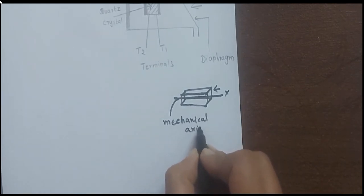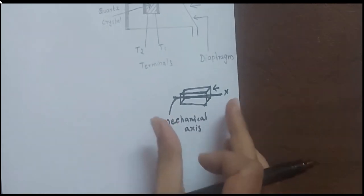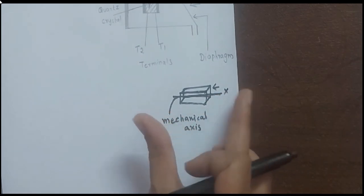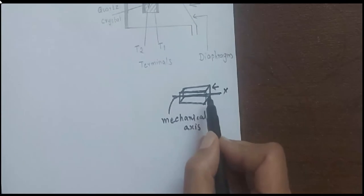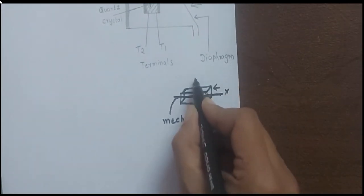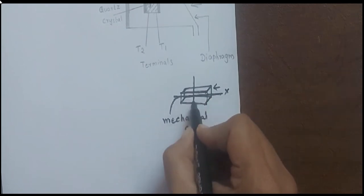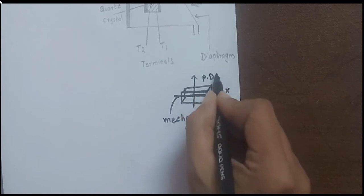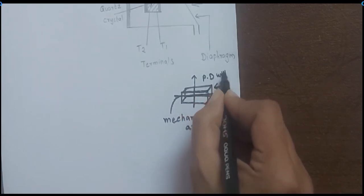When we apply force along this axis, we call it the mechanical axis. Along the mechanical axis, we expand and contract the crystal. When expansion and contraction occur, on the perpendicular faces a potential difference will be generated. The axis along which this potential difference is generated we call the electrical axis.